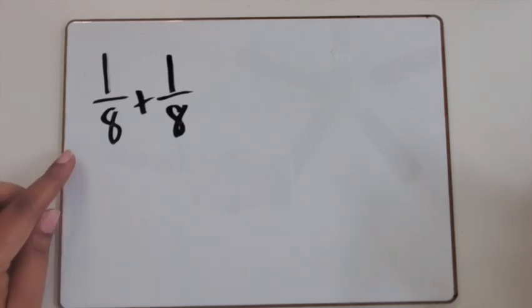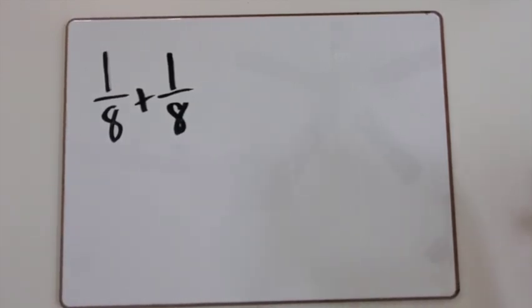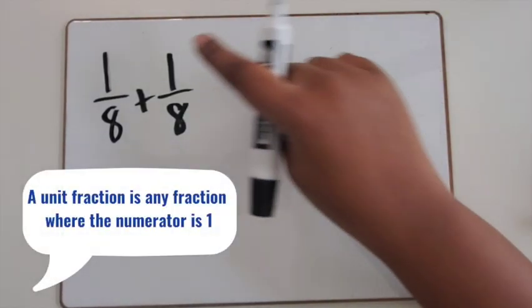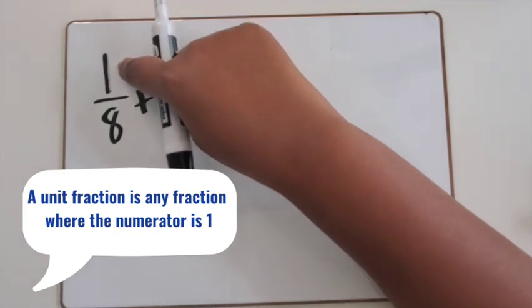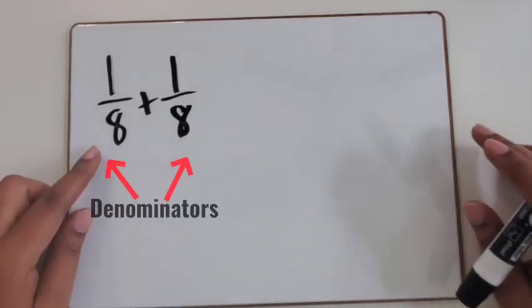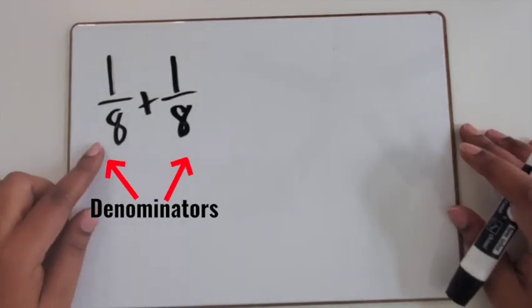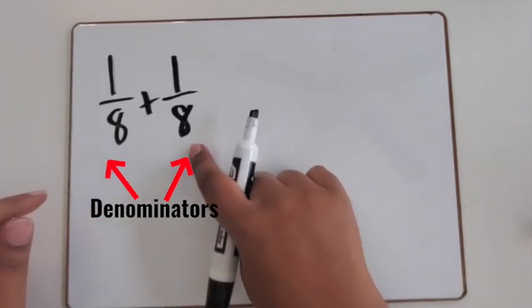In this first example, we're using two fractions that are unit fractions. A fraction is a unit fraction when the numerator is one. Looking at these two fractions, what are their denominators? The first fraction is one eighth, and the second fraction is one eighth as well.